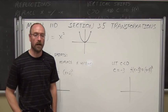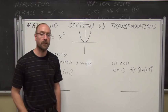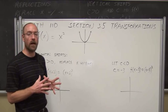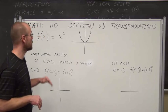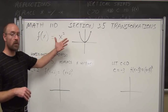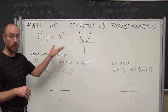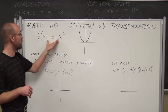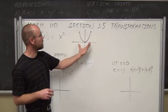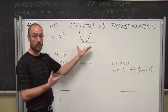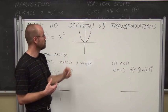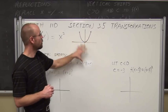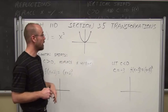Hello, and welcome to Bay College's online lectures for college algebra. This is section 3.5, dealing with transformations. These are things that we apply to our library functions, which we discussed in the previous section. The example we're going to use for most of these different transformations is f of x equals x squared. This is our library function that we call the square function or the quadratic function. It's a parabola — a U-shaped curve on our graph with the intercept at 0,0 and a domain of all real numbers. We should know quite a bit about the quadratic graph.